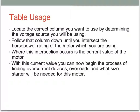This slide is a review of basic table usage. Locate the correct column by determining the source voltage, then follow that column down until you intersect the horsepower rating of the motor. Where this intersection occurs is the current value of the motor. With this current value, you can begin the process of finding overcurrent devices, overloads, and what size starter will be needed.